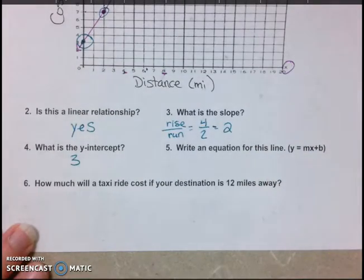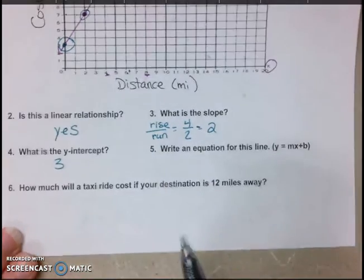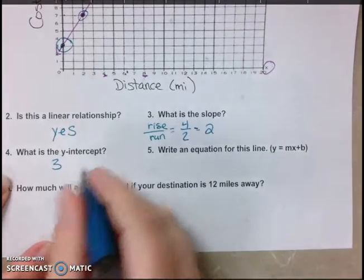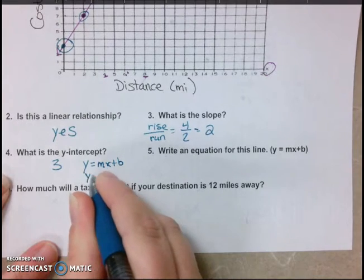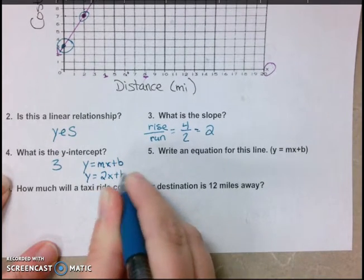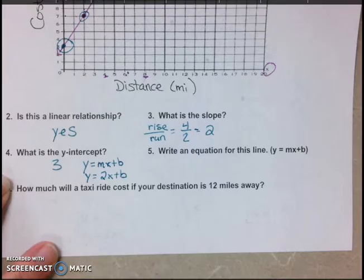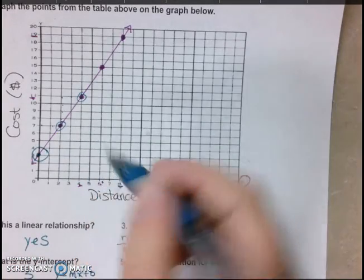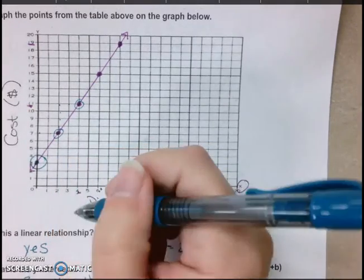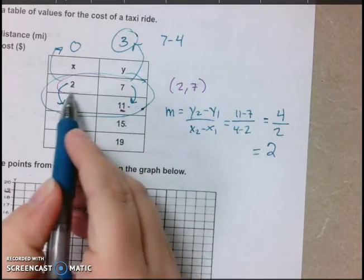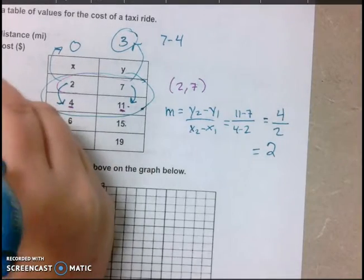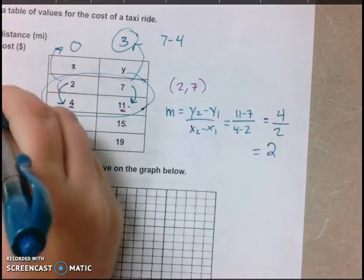But here is the other way I really want you to know how to do. Because what if it is a decimal and we couldn't tell where it landed? What you do is you use this equation, y equals mx plus b. We know that the slope is 2. We still need to find b. So now you can pick an x and a y that fit on this graph. So let's say when x is 2. Let's choose this point, which is right here. When x is 2, I know y is 7.